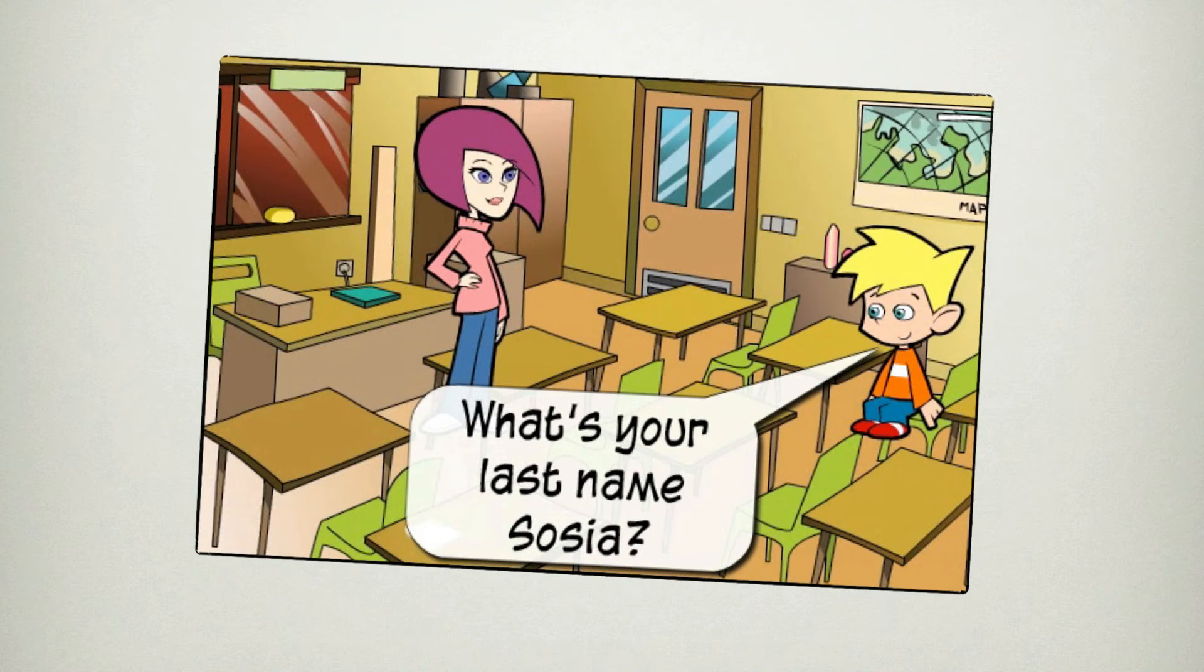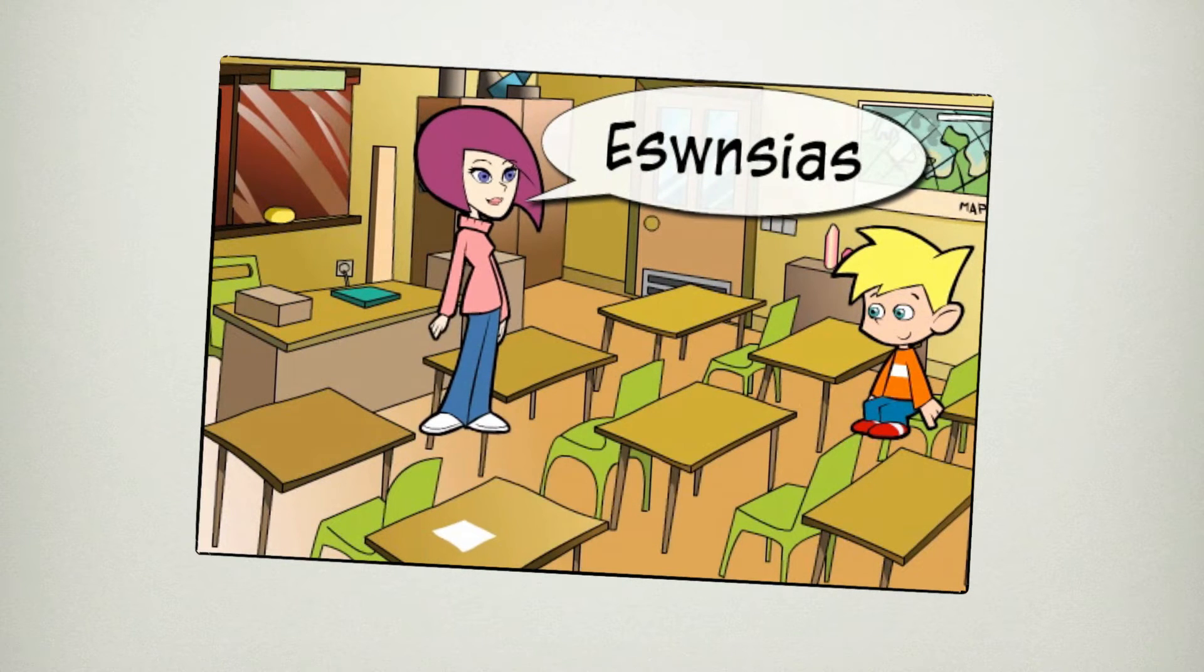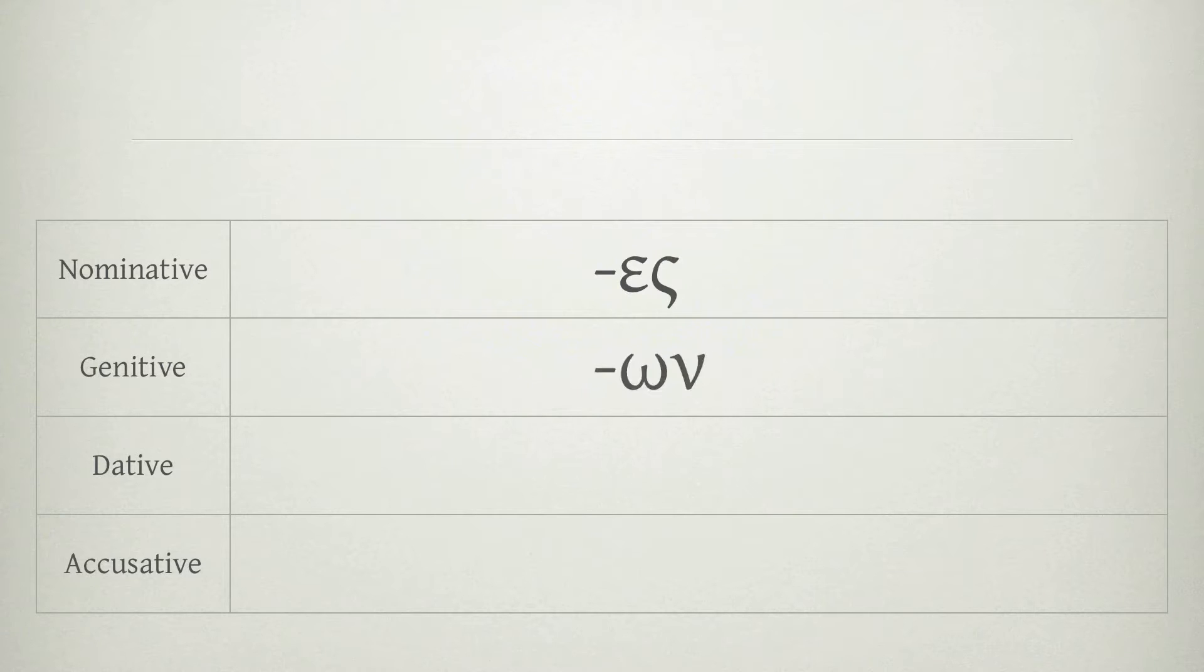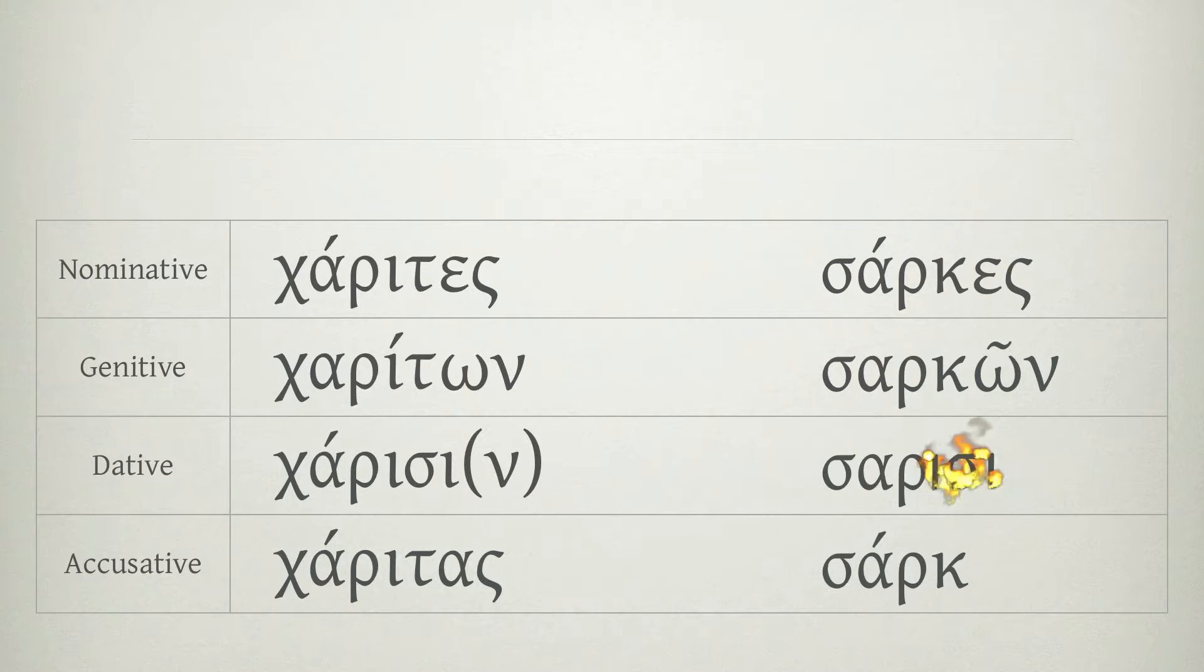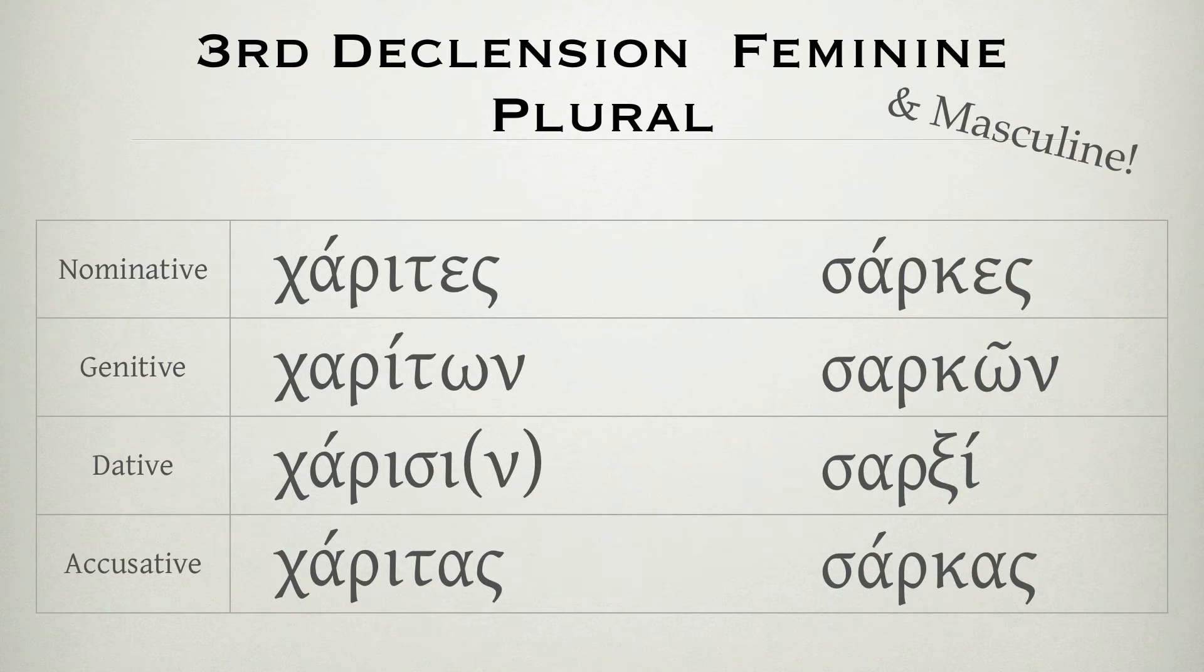Saucy-R has our last name too, and it is S-A-S-E-A-S, S-A-S-E-A-S, S-A-S-E-A-S, third declension, feminine, plural.